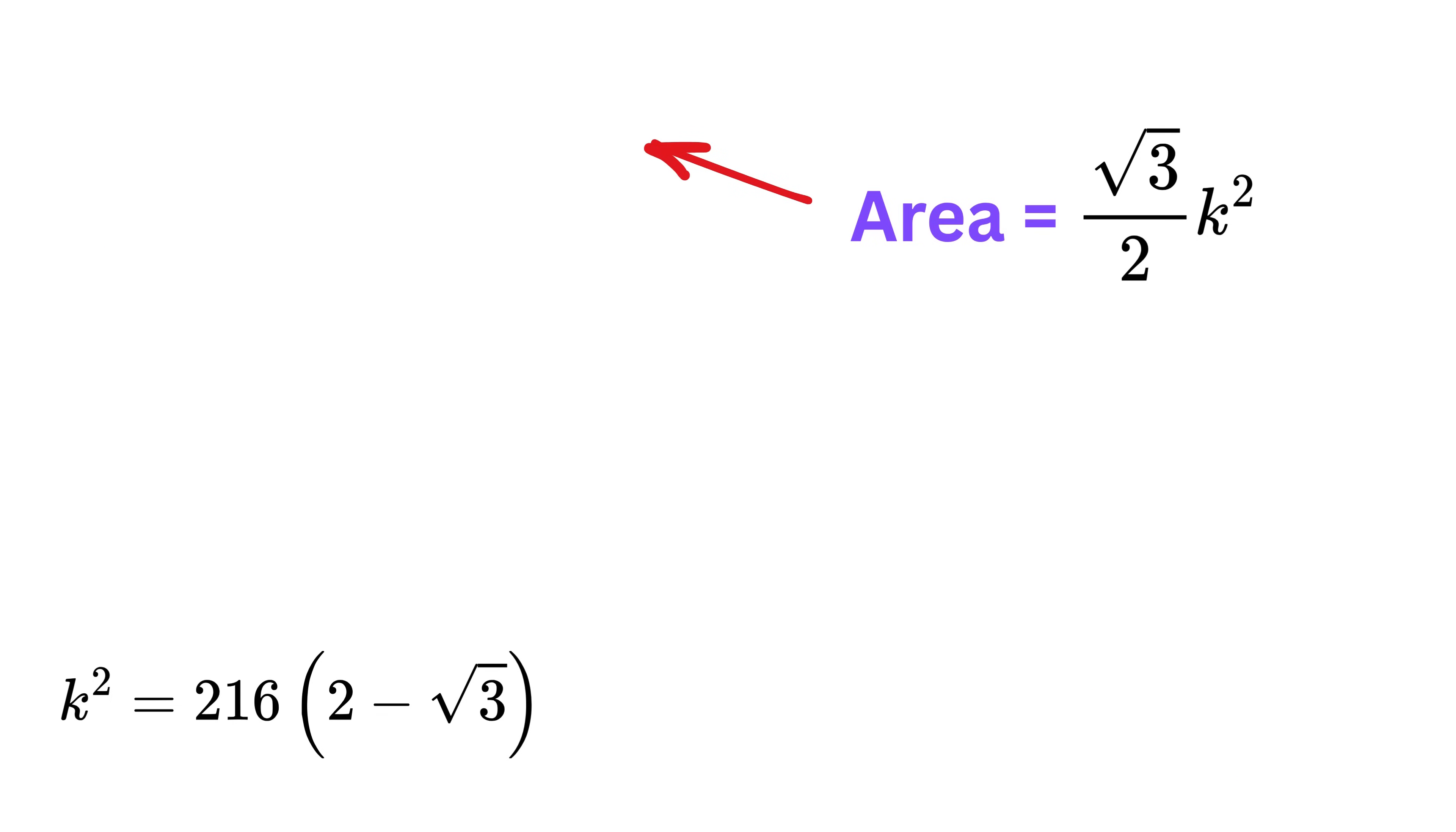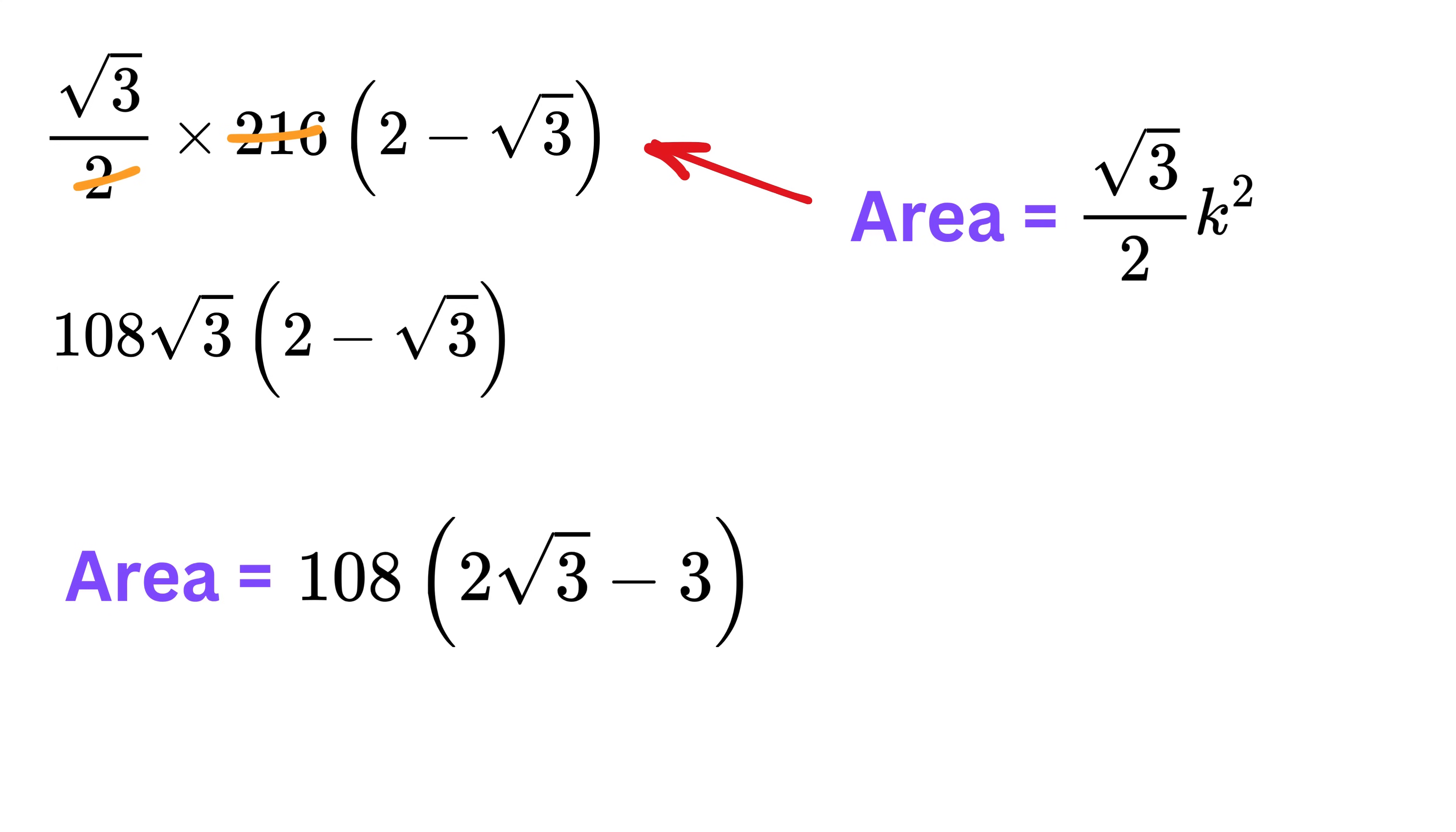Therefore, the area becomes square root of 3 over 2 times this. Divide by 2 to get 108 times 2 minus root 3. Now multiply this by root 3 to get 108 times 2 root 3 minus 3, and that's it. Also, if you prefer a decimal approximation, that exact expression evaluates to approximately 50.123 square units.